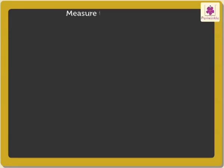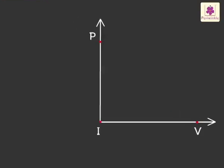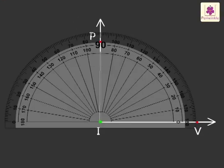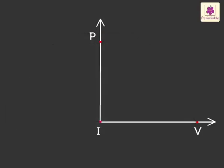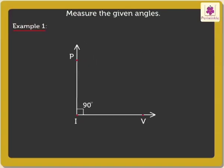Let's measure a few more angles. Look at the figure. On measuring, we get the measure of angle PIV as 90 degrees.